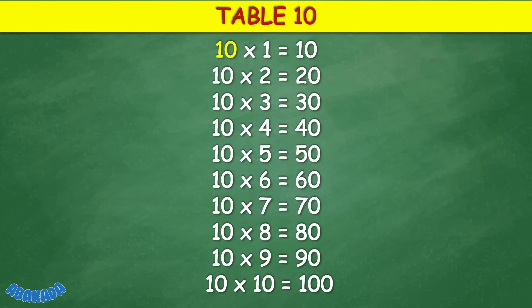Table 10: 10 times 1 equals 10, 10 times 2 equals 20, 10 times 3 equals 30, 10 times 4 equals 40, 10 times 5 equals 50, 10 times 6 equals 60, 10 times 7 equals 70, 10 times 8 equals 80, 10 times 9 equals 90, 10 times 10 equals 100.